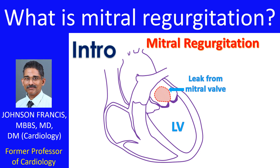In mitral regurgitation, as the valve is leaky, blood flows back into the left atrium, the upper chamber, when the left ventricle contracts. This leads to enlargement of the left atrium.